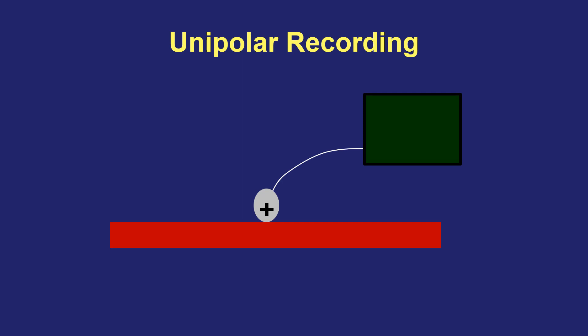In a unipolar recording, the anode records a wavefront moving from left to right past the electrode. When the wavefront is far away from the electrode at the beginning and end, it is outside of the field of view and therefore the electrode records nothing. Only when the wavefront gets close enough will it start to record. When the wavefront moves toward the electrode, you see a positive deflection; when the wavefront passes underneath and starts to move away, there is a rapid change in polarity to negative — until it is completely out of view, at which point there is no longer a recording.